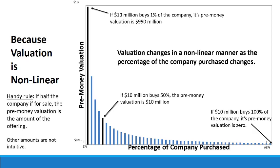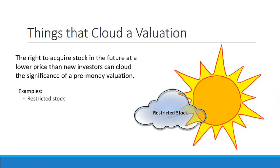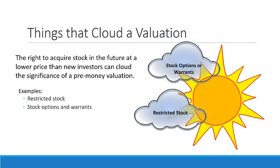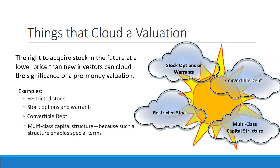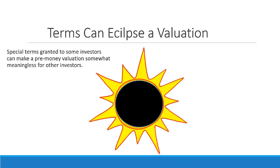There is a handy rule, however: if half the company is for sale, the pre-money valuation is always the amount of the offering. Other amounts are not intuitive. The right to acquire stock in the future at a lower price than new investors can cloud the significance of a pre-money valuation. Examples are restricted stock, stock options and warrants, convertible debt, and a multi-class capital structure, because such a structure enables special terms. Special terms granted to some investors can make a pre-money valuation somewhat meaningless for other investors. In other words, terms can eclipse a valuation.